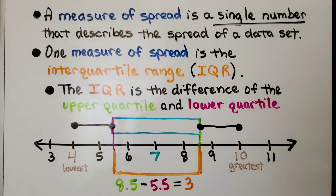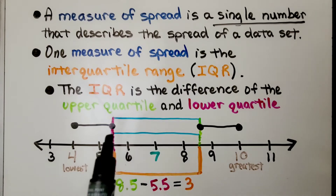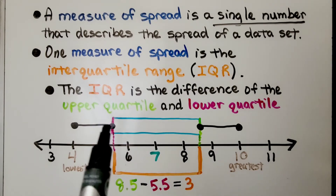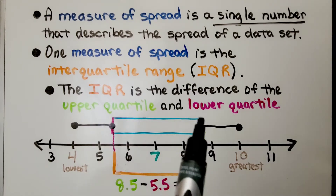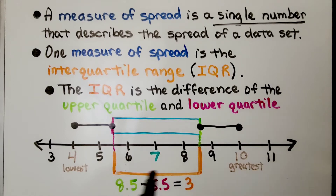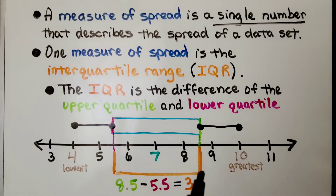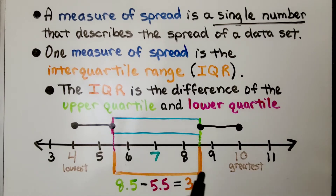The IQR is the difference of the upper quartile and the lower quartile. As we learned in the last video, 16.3a, here's the lower quartile and here's the upper quartile. The IQR is the difference between these two. So if this is 8.5 and this is 5.5, the IQR is 3.